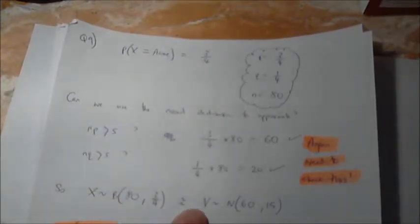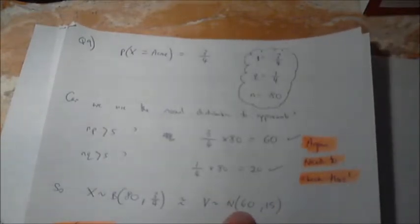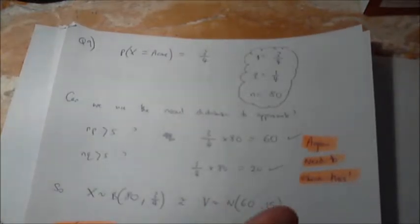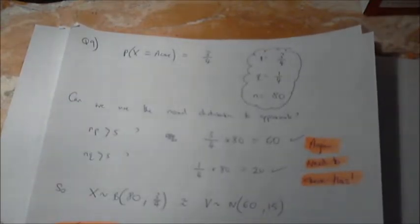is approximate to my normal distribution. Notice how I've changed this. So this is now NP, so that was 80 times three quarters, and this is NPQ. Okay, this is a nice little step here. You write that, you will definitely get marks in the exam for that stage. And it helps us later on in the question.